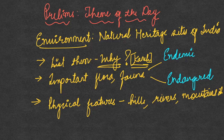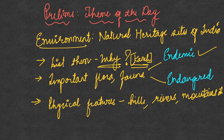We will start today with the prelims theme of the day. Today's theme is on environment — specifically the natural heritage sites of India. The first thing you have to do is make a list of the natural heritage sites of India, and more importantly, you have to know why a particular site has been classified as a natural heritage site — what are those features or characteristics that made it one.